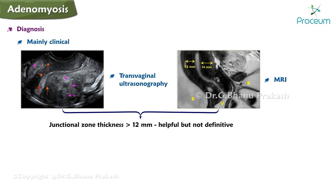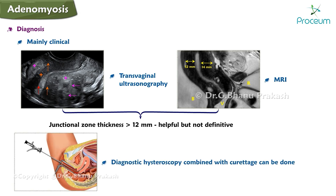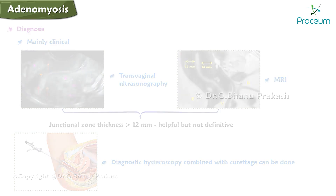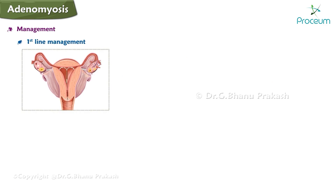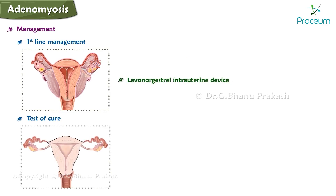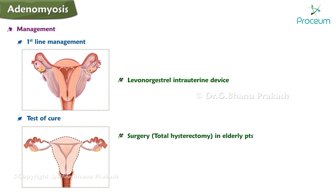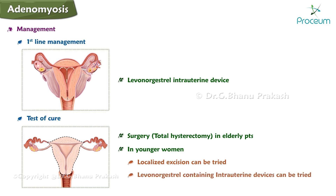Halban's sign — a tender, softened uterus on pre-menstrual bimanual examination — is characteristic. Diagnosis is mainly clinical. Transvaginal ultrasound or MRI showing junctional zone thickness greater than 12 mm are helpful but not definitive. Diagnostic hysteroscopy combined with curettage can also be done. First-line management is the levonorgestrel intrauterine device. Definitive surgical treatment is total hysterectomy, though in younger women localized excision or a levonorgestrel IUD can be tried.